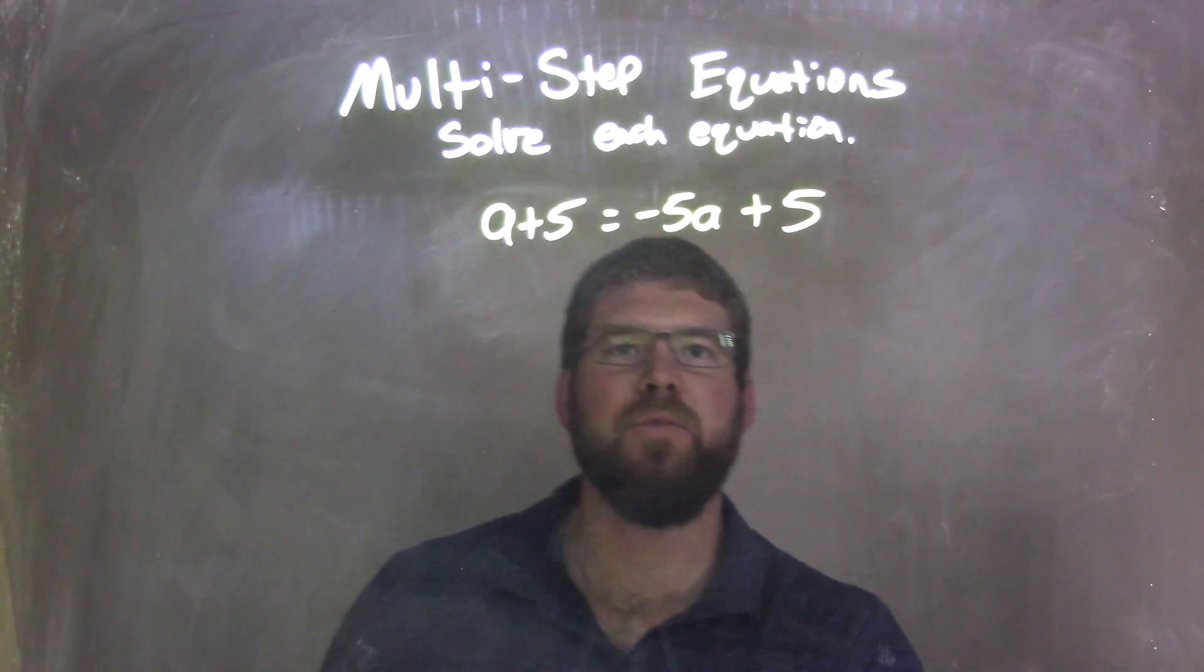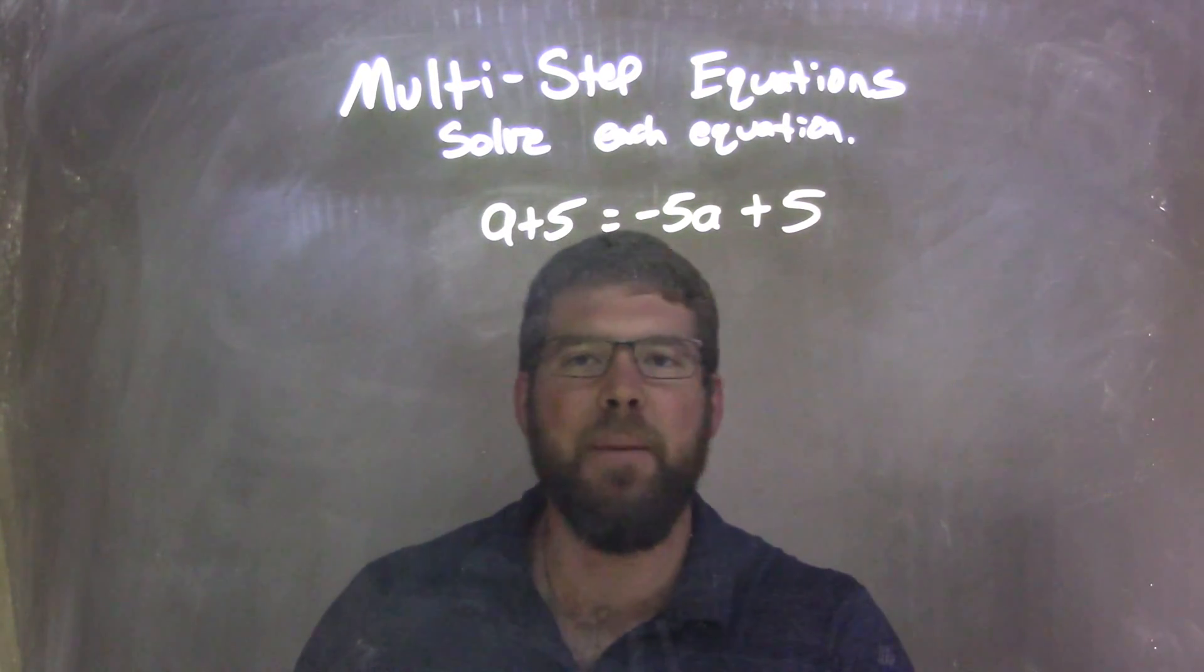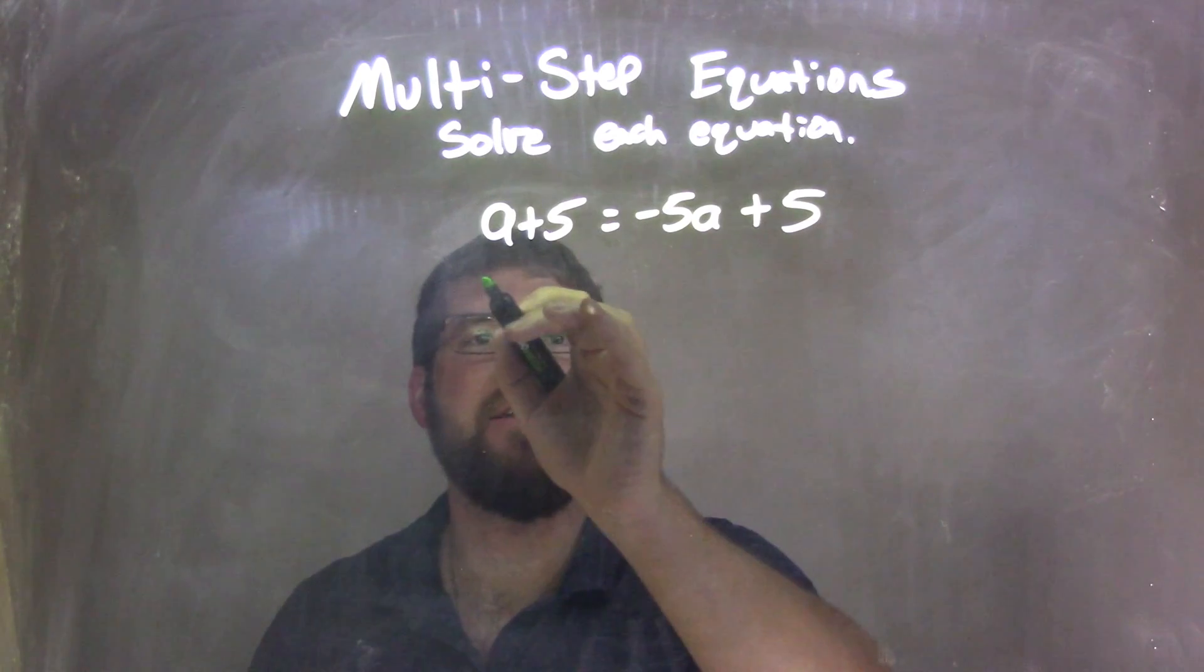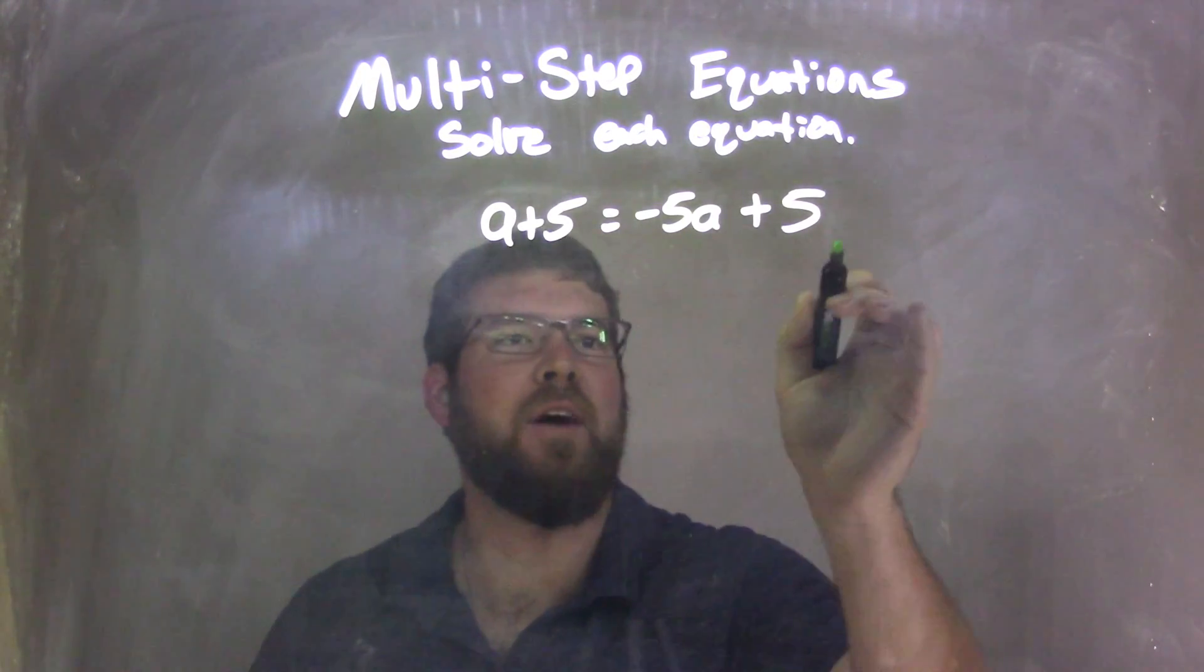Well, I want to combine my like terms. So to make everything positive, because I like that, I'm going to add 5A to this side, and then I'm going to subtract the 5 to this side.